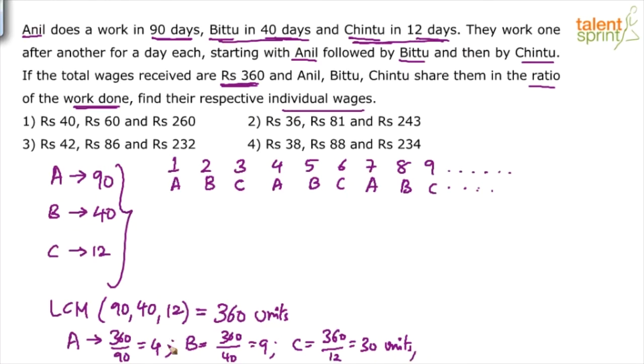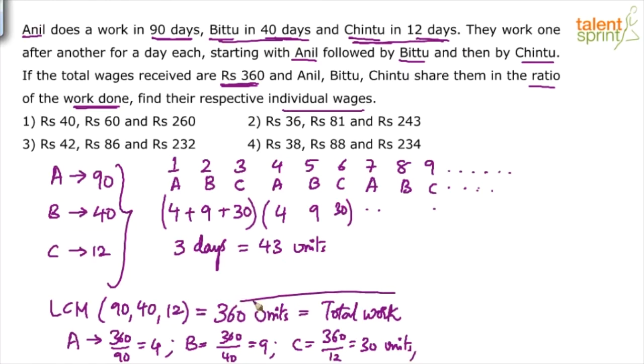Now we know the number of units that they can do per day. Anil can finish 4 units, Bittu can do 9 units and Chintu can do 30 units. How much of work will get over in first day? 4 units of work will get over. Usually we work with 1 unit. This time we have taken 360 units, the LCM of the number of days. Out of total 360 units, Anil has finished 4 units on the first day, Bittu will finish 9 units on the second day, Chintu will finish 30 units on the third day. In 3 days, the amount of work done is 4 plus 9 plus 30. So 43 units is getting done. Total number of units to be done is 360.